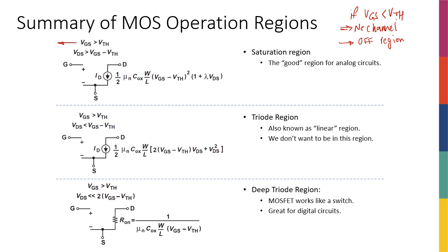VGS is greater than VTH - condition for being on. And if VDS is greater than VGS minus VTH, meaning that you're in the pinch-off region, so condition for pinch-off, then I know that I'm in the saturation region.